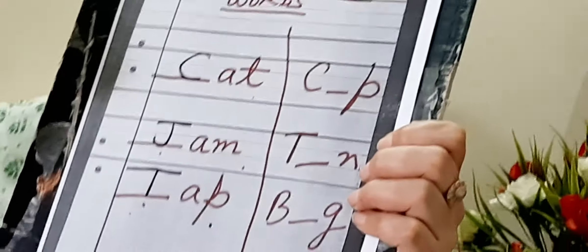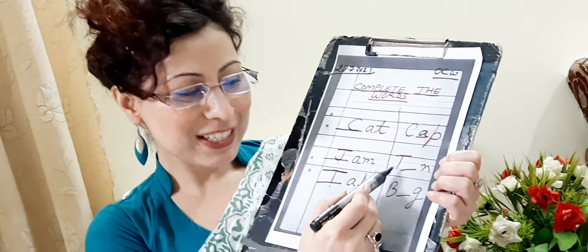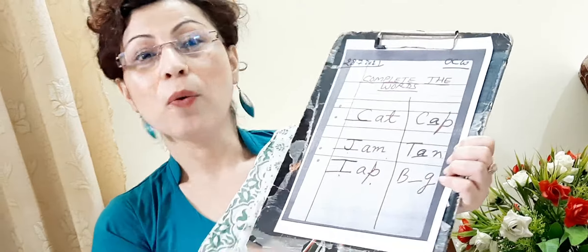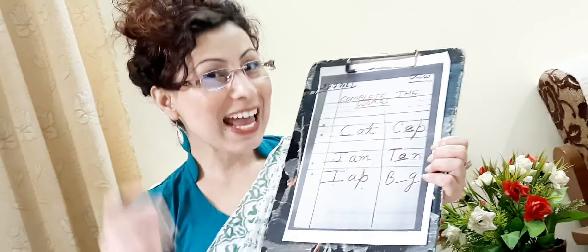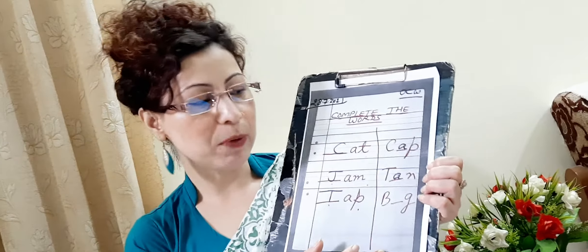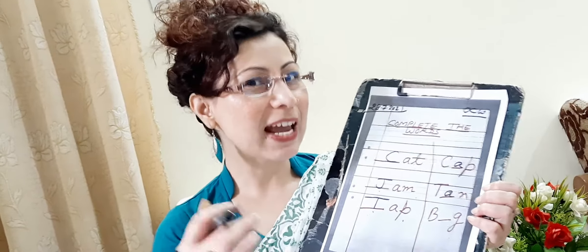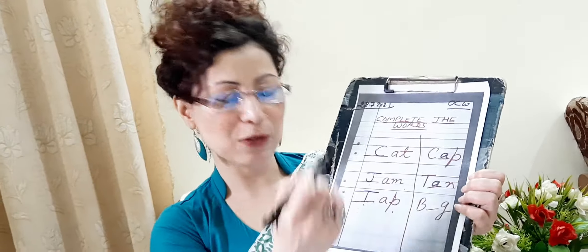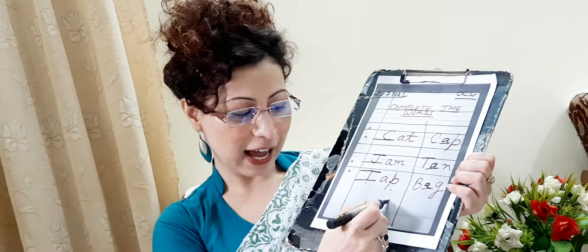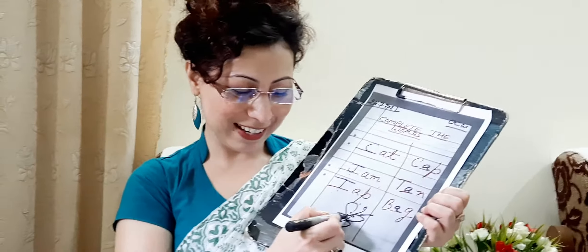Now let's do here. C-dash-P: C-A-P, cap. We have completed the word. D-A-T-dash-N: T-A-N, tan. B-dash-G: We are working on the A sound, so we are purposely filling A words. You can write another alphabet also, but we are working on the A sound, so I am filling a small A. B-A-G, bag. As a gift, I am giving you a butterfly, and it is smiling.